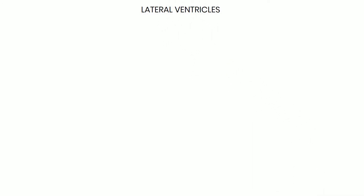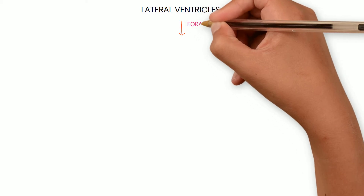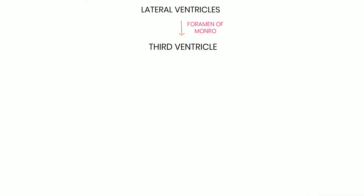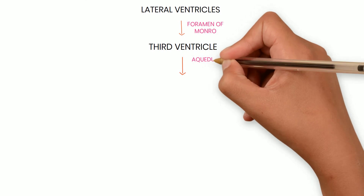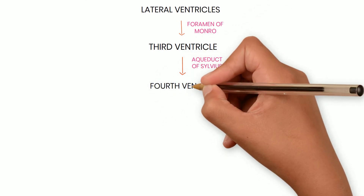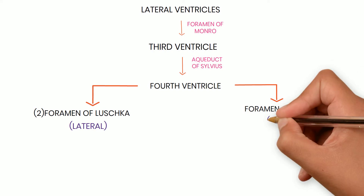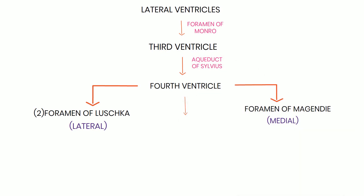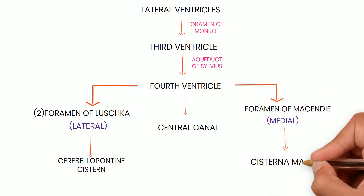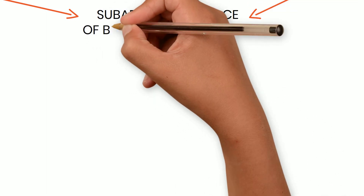To summarize: CSF is produced by the choroid plexus of the lateral ventricles, flows through the foramen of Monro into the third ventricle, then through the aqueduct of Sylvius into the fourth ventricle. From the fourth ventricle there are three routes: through the foramen of Luschka (lateral apertures) into the cerebellopontine cistern, through the foramen of Magendie into the cisterna magna, and a small amount into the central canal of the spinal cord. CSF then flows around the subarachnoid space of the brain and spinal cord.